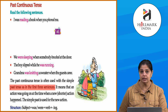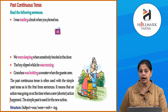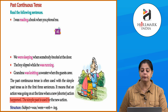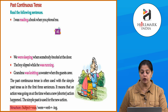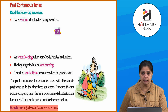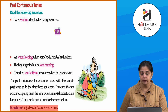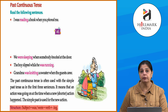Here we use past continuous tense with simple past tense. It means one action was going on when a new, shorter action happened. The simple past tense is used for the new action. The structure is: subject plus 'was/were' plus verb plus -ing. For example: 'We were sleeping when somebody knocked at the door' — here 'knocked at the door' is simple past, and 'we were sleeping' is past continuous. That is how our past continuous tense sentences are formed.